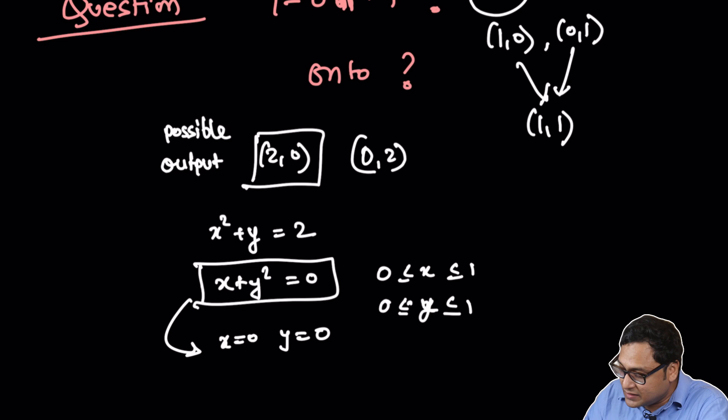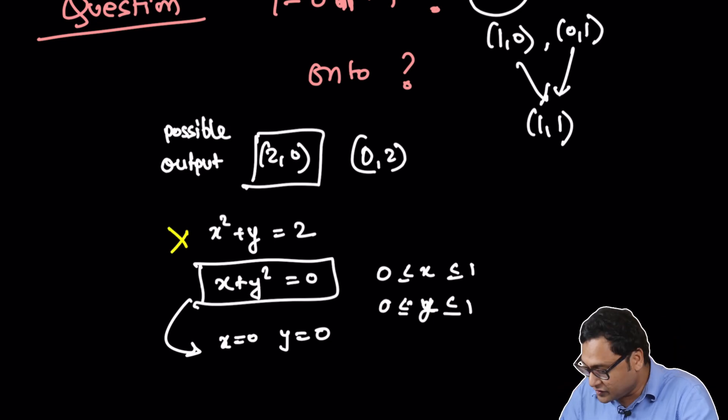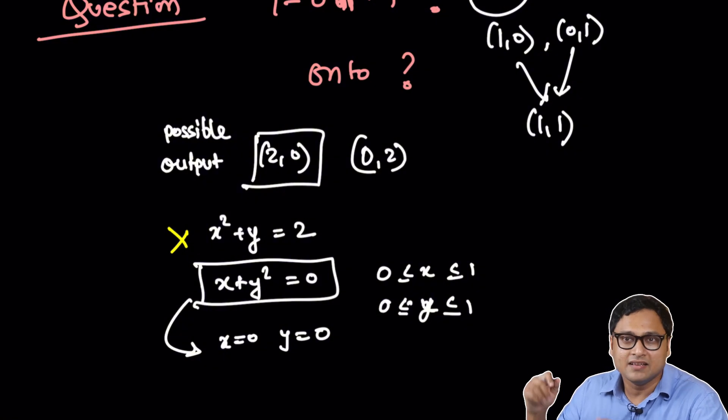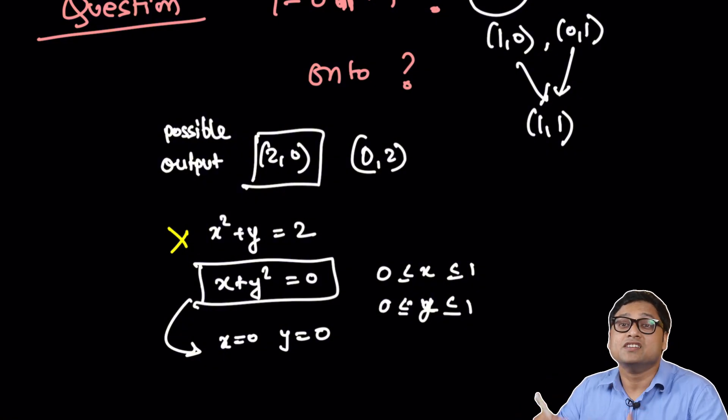But if that is true, then the first equation does not hold ground. 0 squared plus 0 is not 2. So there is no point in the input space that goes to 2 comma 0. 2 comma 0 is in the co-domain. So the function is not onto.